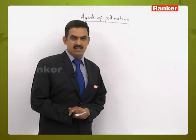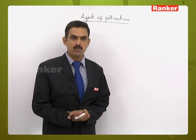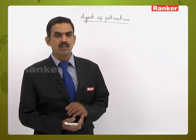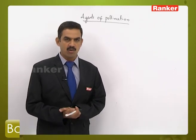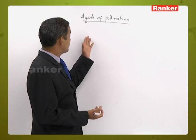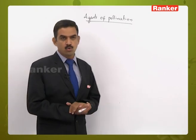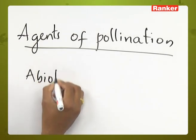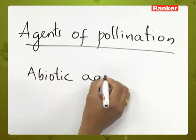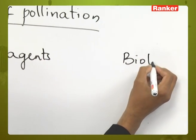Agents, or external agents, are required for transfer of pollen grains from anther to stigma. These agents are required only for cross-pollination; no agents are needed for self-pollination. There are two types of agents: abiotic agents and biotic agents.